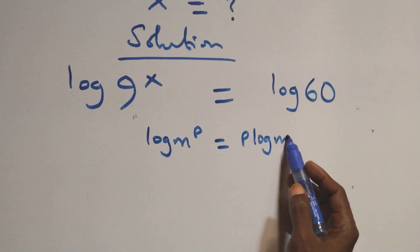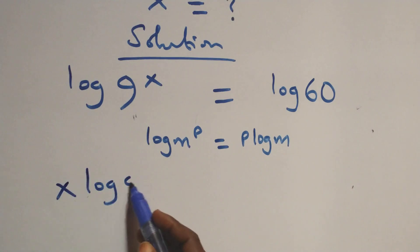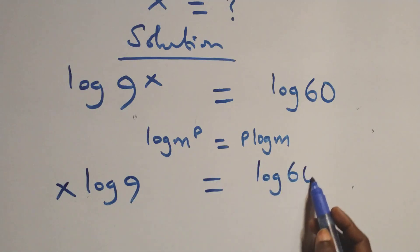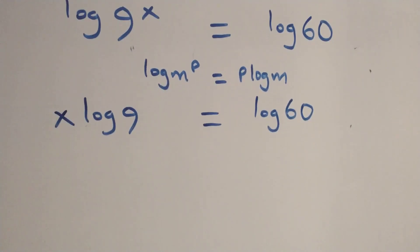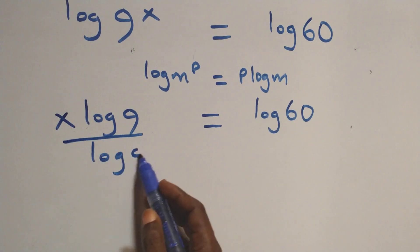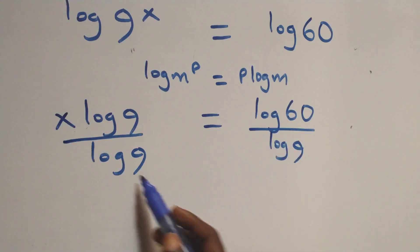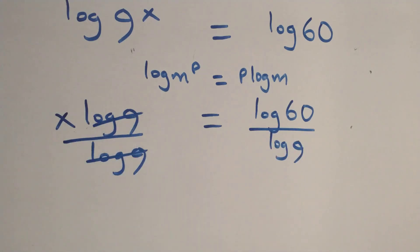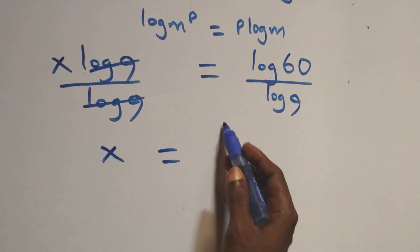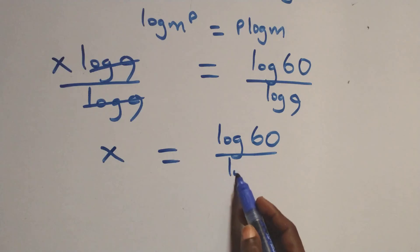So all we have becomes x·log(9) = log(60). In the next step we divide both sides by log(9), so log(9) cancels and we have x = log(60) / log(9).